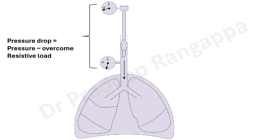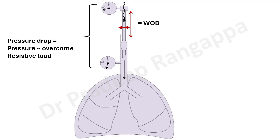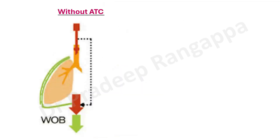This pressure drop increases resistance to airflow, from the circuit level — meaning the endotracheal tube — to the trachea and lungs. This resistive load needs to be compensated by ATC. In an exam, putting this diagram clearly reflects your conceptual understanding of automatic tube compensation. Translating this into work of breathing: the work of breathing is dependent on the length of the ET tube, the diameter of the ET tube, and the inspiratory airflow into the endotracheal tube.